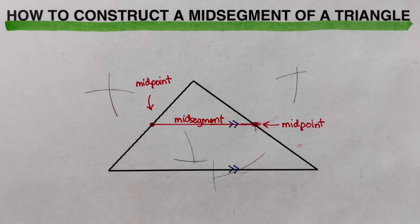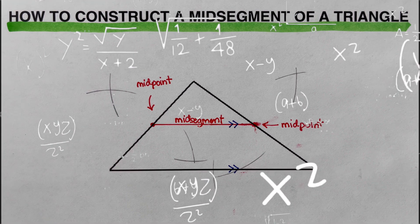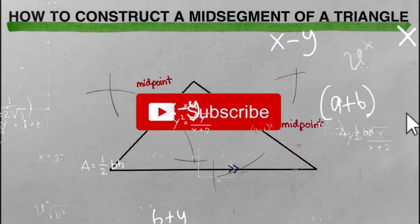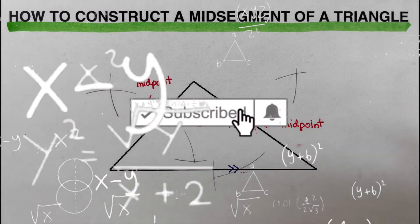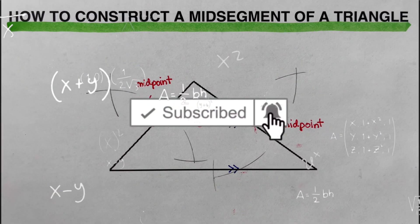And that is how we construct a mid-segment of a triangle using a compass and a straight edge — in this case, using a ruler. That's it! If you found this video helpful, hit like and subscribe for more math videos. See ya!